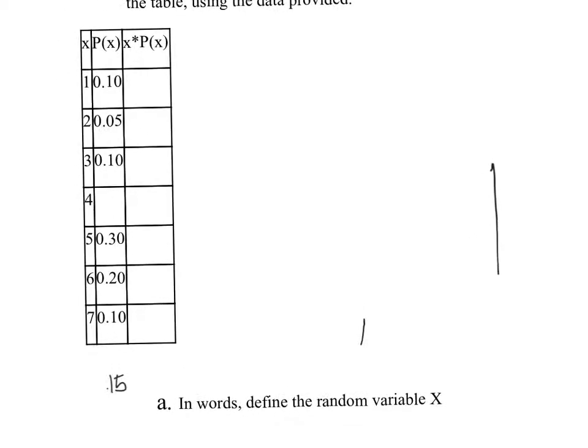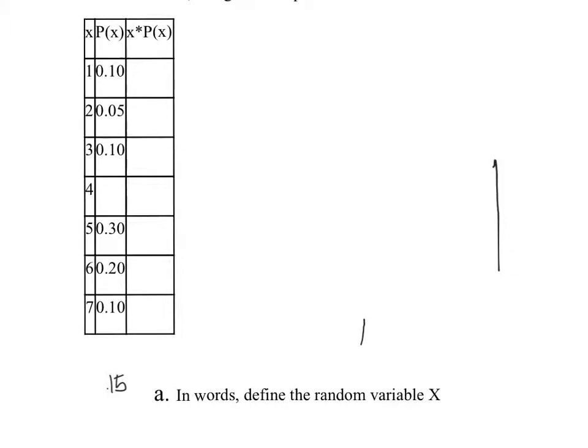Remember, by definition, the total probability must equal 1. That makes it a probability distribution. As you can see, the probability of X equals 4 years is missing, so let's find out what value corresponds to 4. So 0.10 plus 0.05 is 0.15, 0.25, 0.55, 0.85, so 0.15 must be filling this slot here.